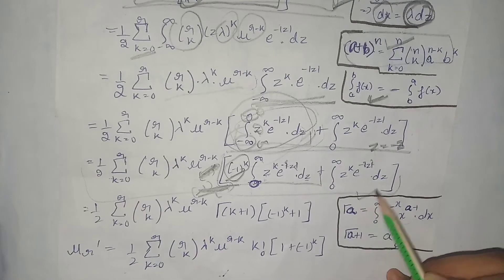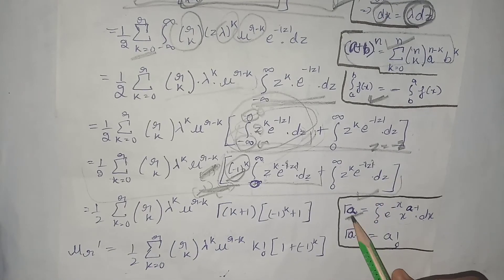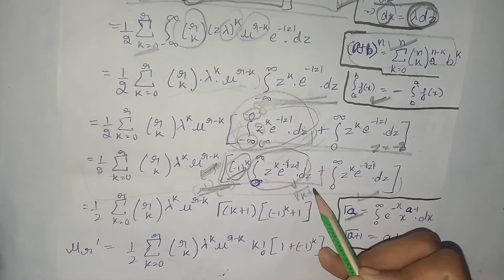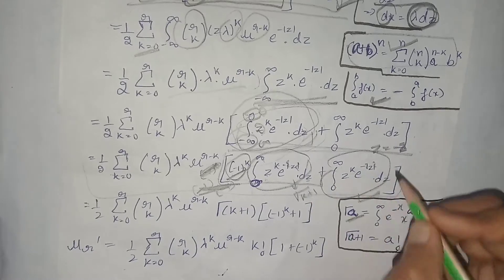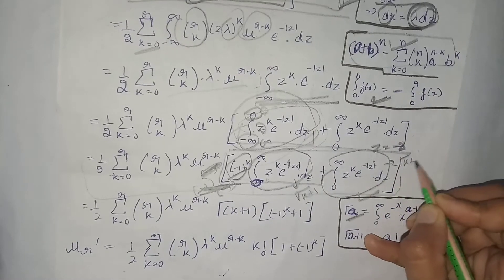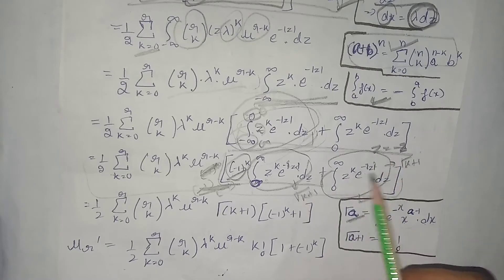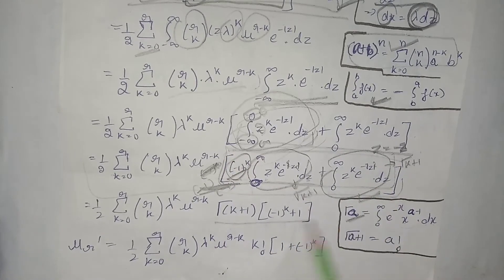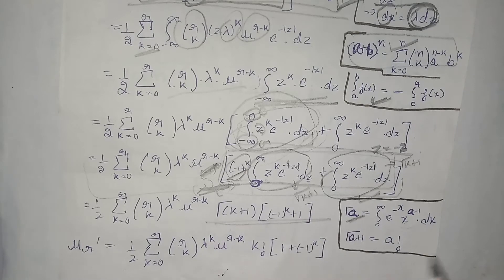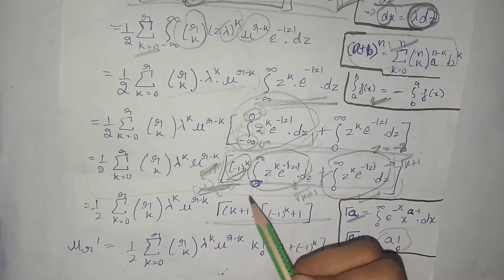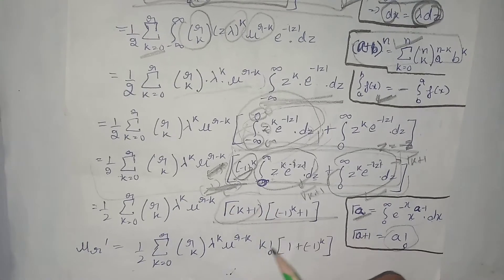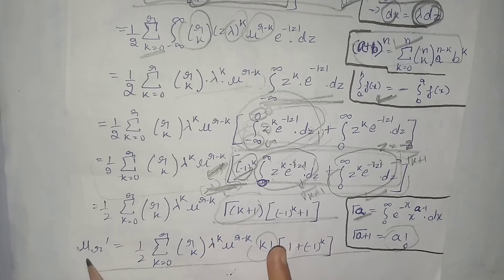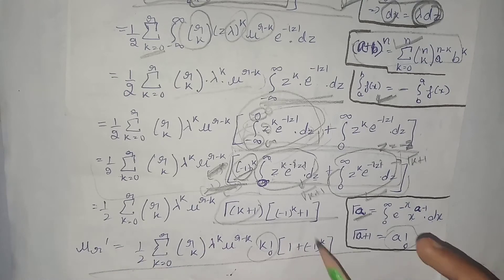Using the gamma function formula, we replace the integrals with Γ(k+1), and taking Γ(k+1) outside from both terms gives the combined value. Since Γ(a+1) = a!, we can write Γ(k+1) = k!. This overall expression is the rth moment about origin of the two-parameter Laplace distribution.